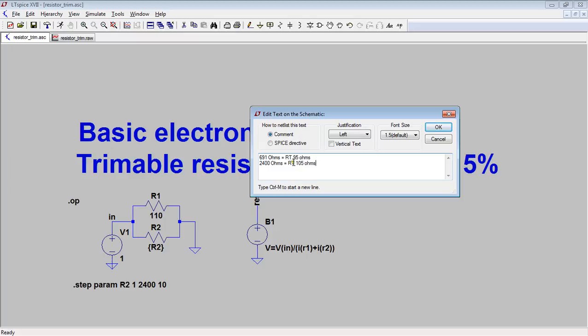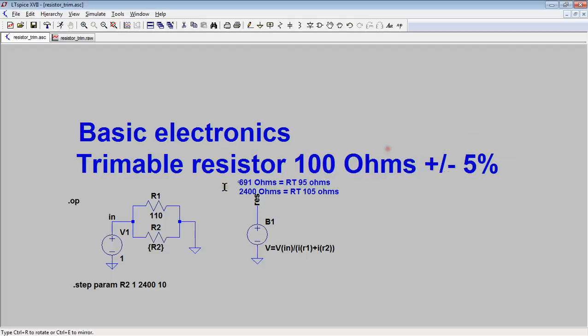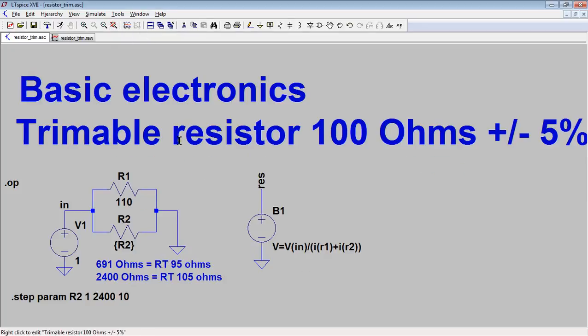And 2400 RT equals 105 ohms. Okay, that's like that. Okay, so just to summarize then.